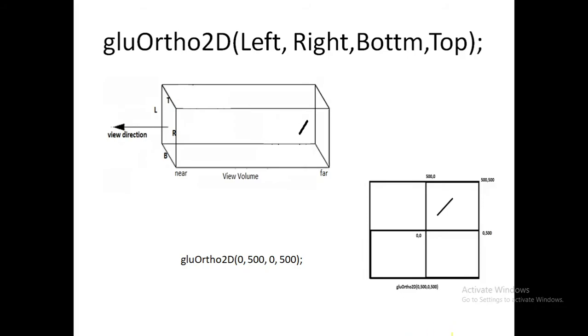You can see there's left, right, bottom, and top. Left side is 0, right side is 500, bottom is 0, top is 500. We're covering only the positive area. If you draw any line, it will be drawn only in this positive area. If you change 0 to minus 500, the full viewing area will be covered. I've drawn a view volume here, applicable for 3D.